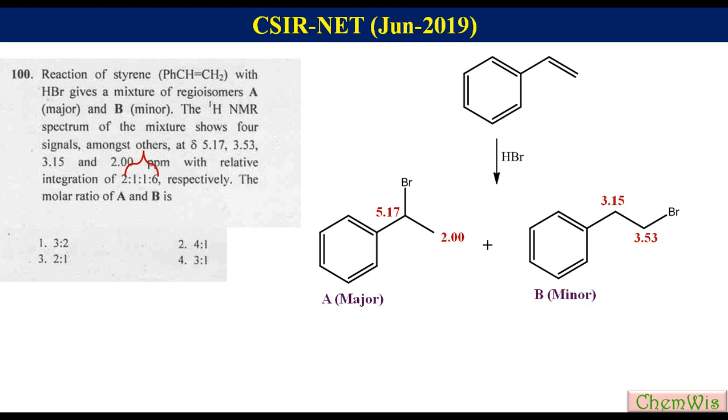For this we will compare the relative intensity for one proton of a particular group in A with the relative intensity for one proton of a particular group in B.